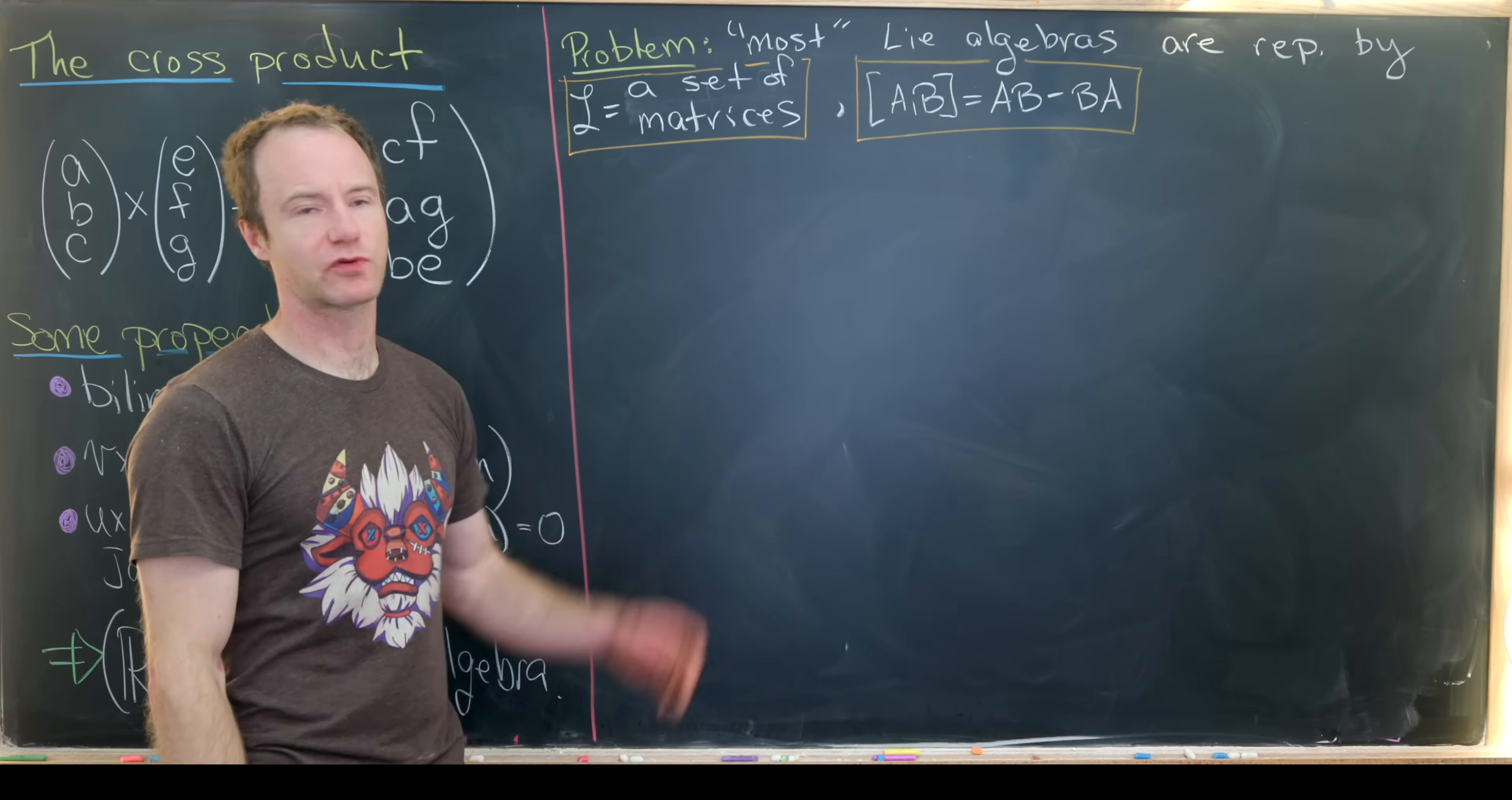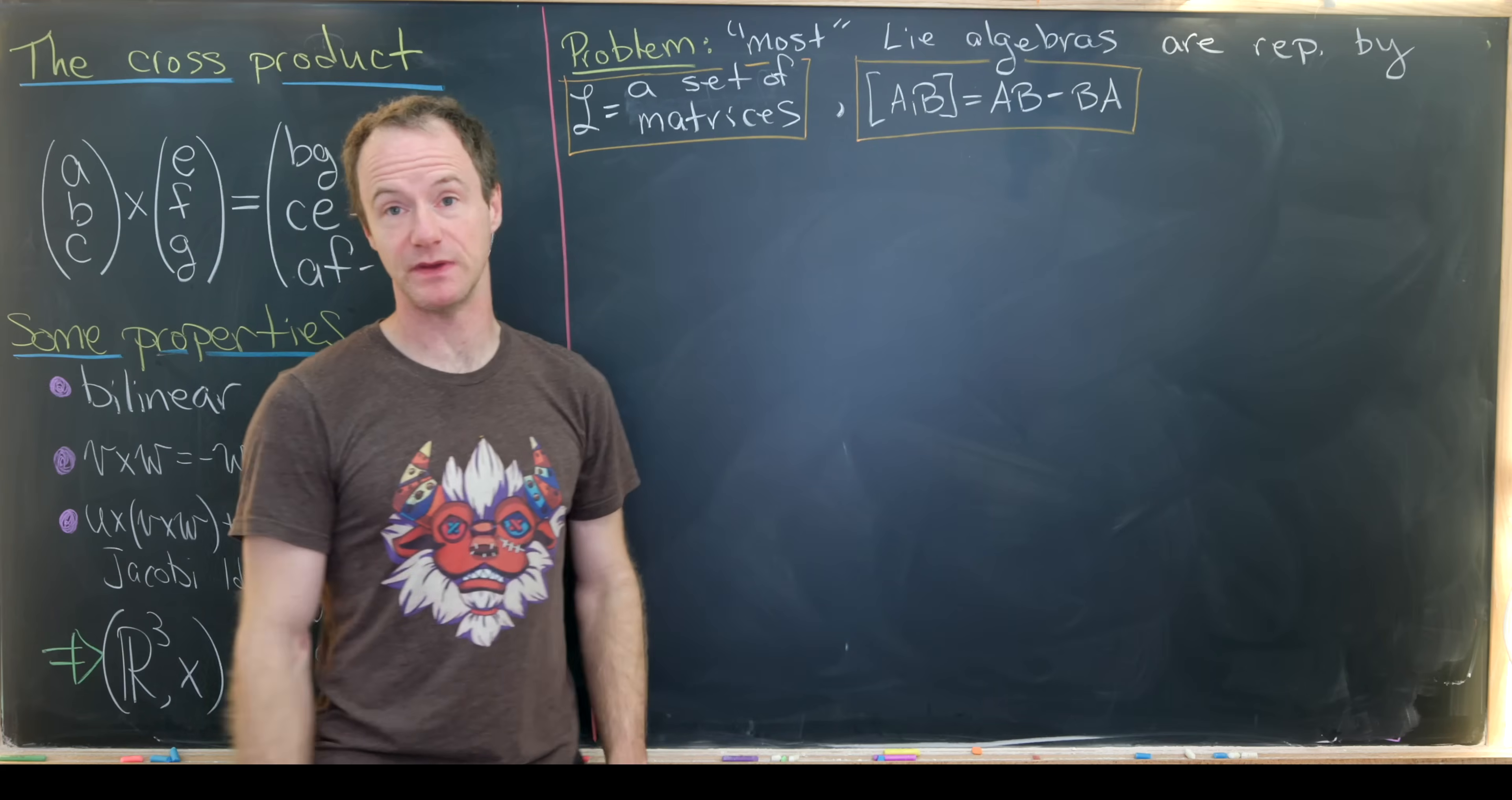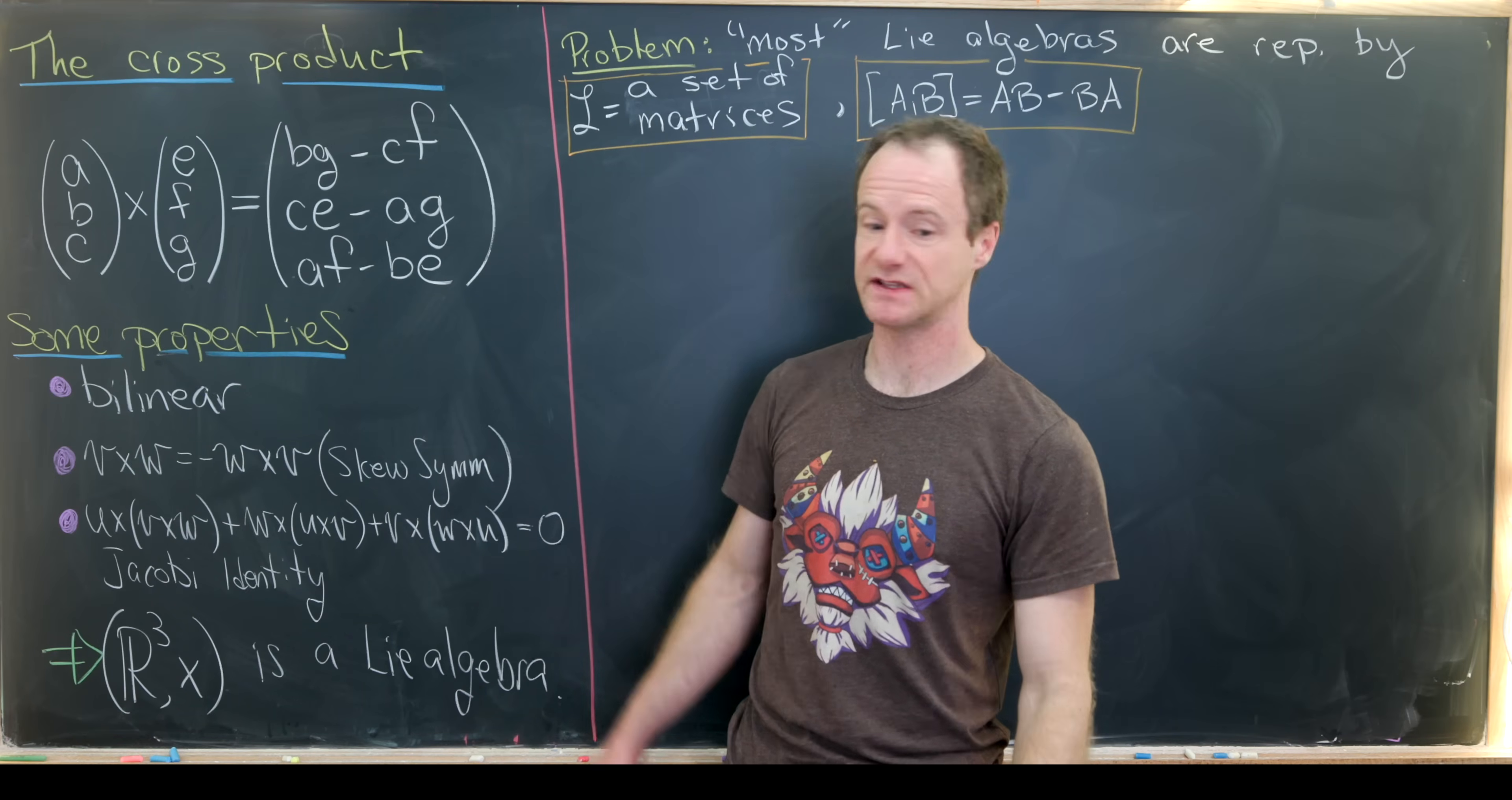And that brings us to the problem of this video. The problem is that most Lie algebras are represented by a set of matrices where our operation is this commutator. So in other words, we have a matrix A and a matrix B, and we define this bracket AB minus BA.